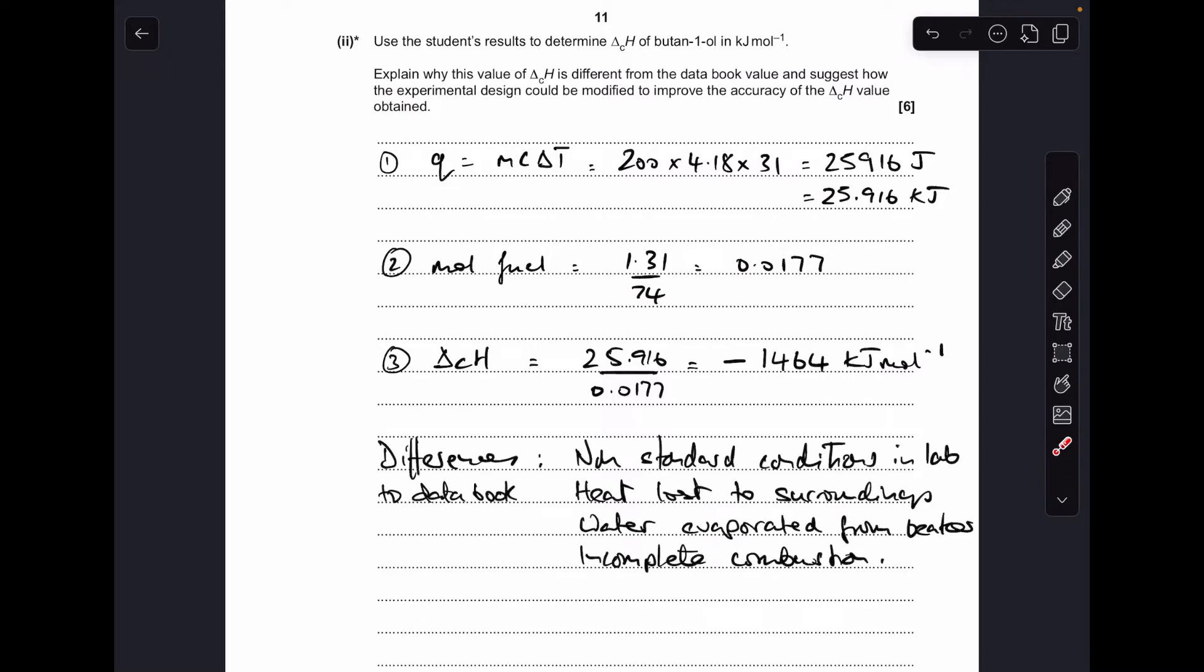So moving on to the differences, and then we'll finish off with the improvements. So differences to data book values. I've gone for four differences. The mark scheme actually only wanted two. So I'm saying there was non-standard conditions used in the lab. Heat's been lost to the surroundings. Water's evaporated from the beaker. And incomplete combustion might have occurred.